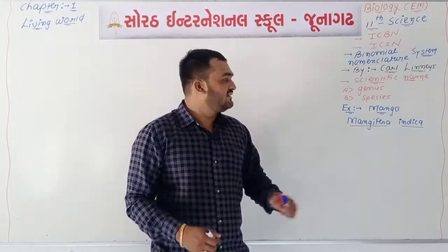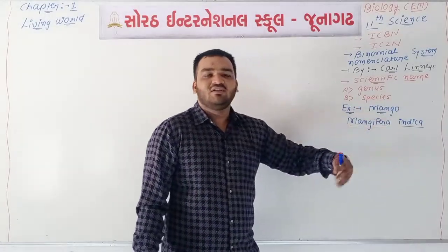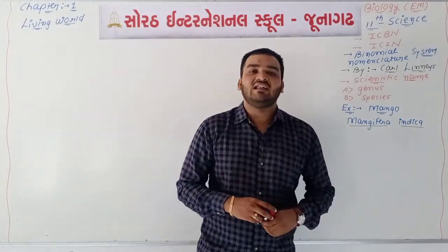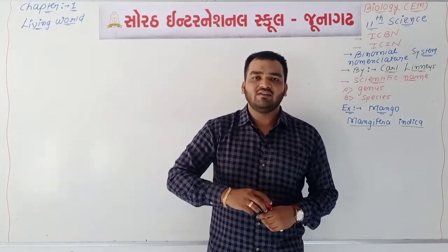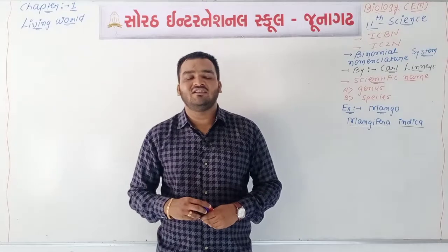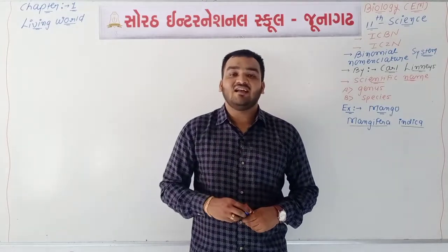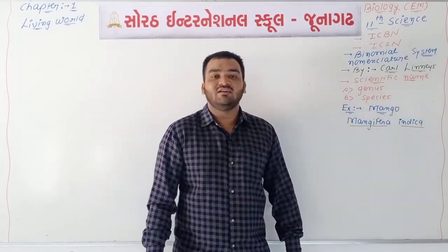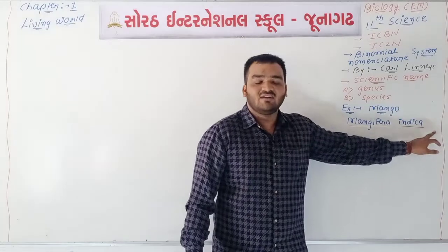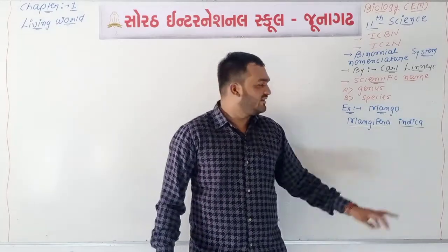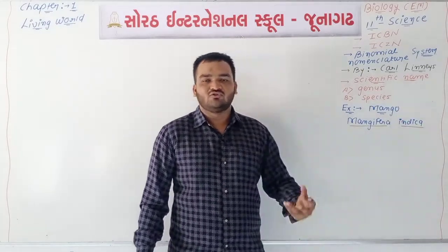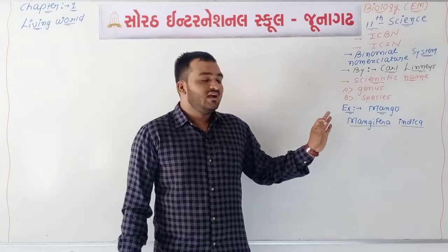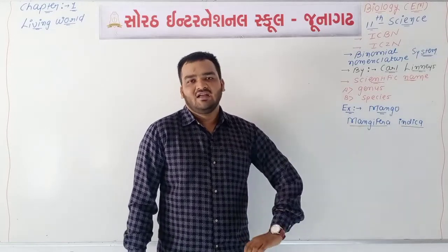Sometimes after the species name, the name of a subspecies is added. For example, Homo sapiens sapiens is the scientific name of modern humans — Homo is the genus, the first sapiens is the species, and the second sapiens is the subspecies. Sometimes the author's name is written in brackets, and sometimes the scientist's name is written shortly at the end. These are all the rules for scientific names and this will 100% definitely be asked in the examination.